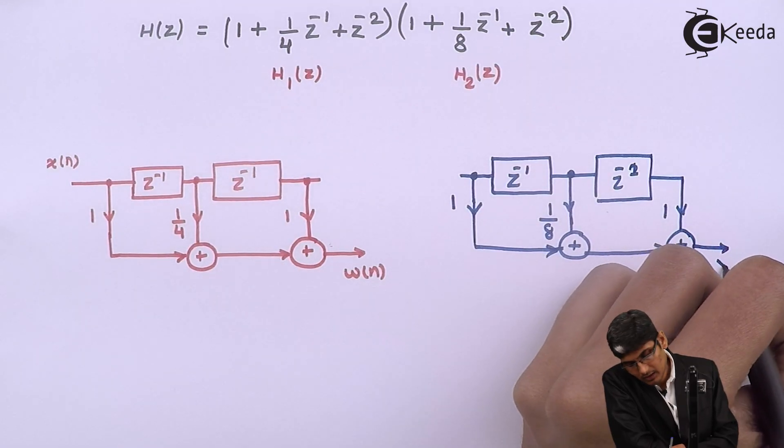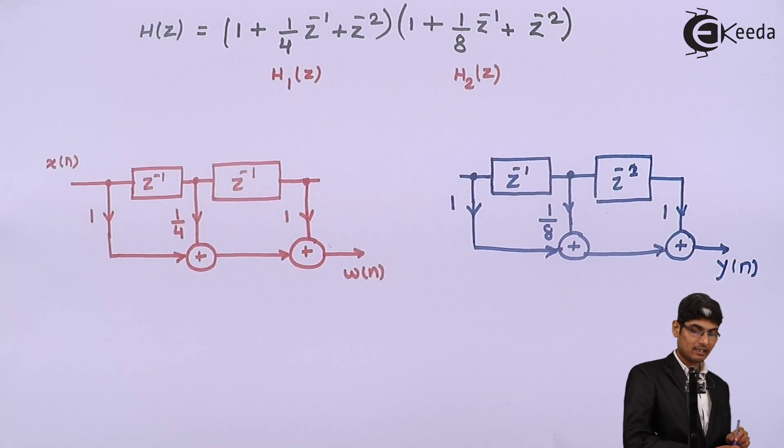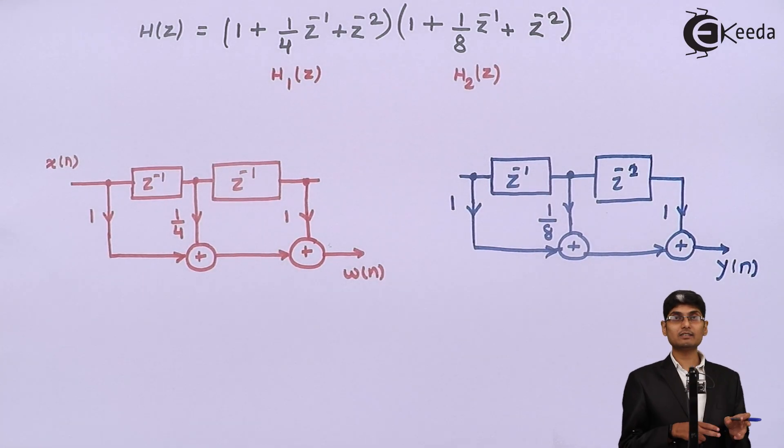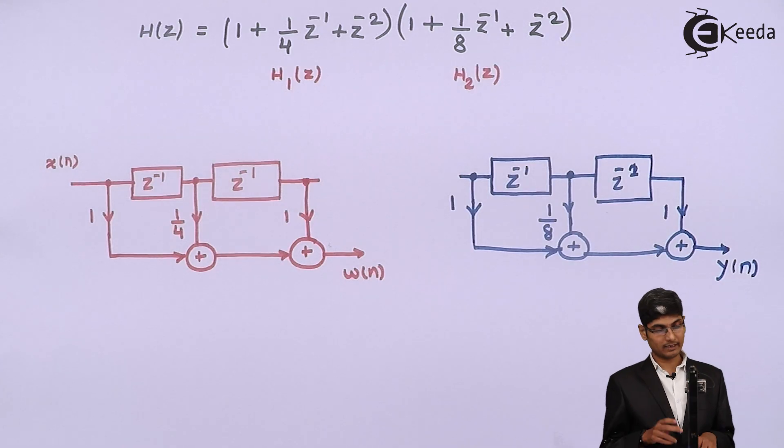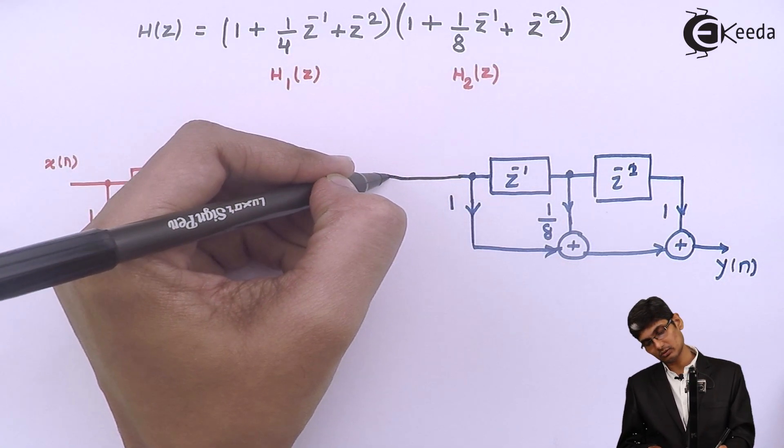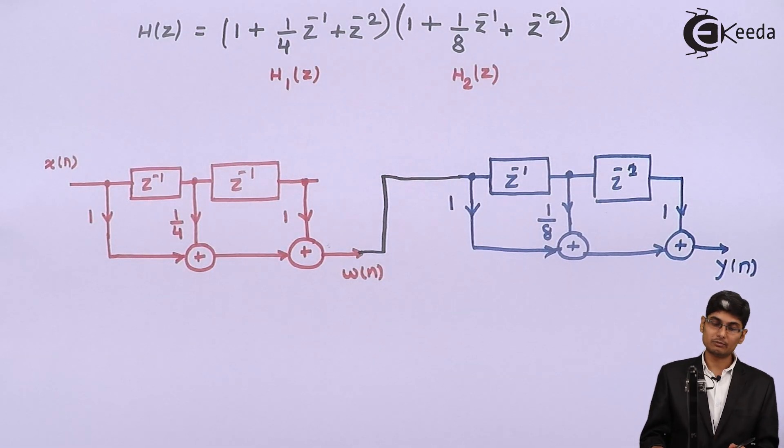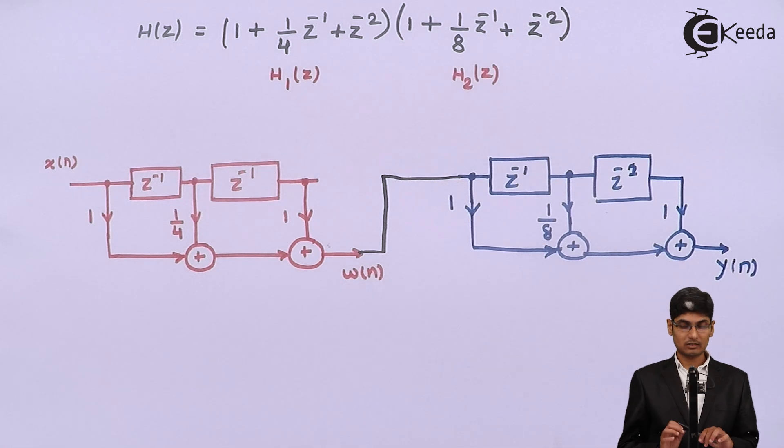This will be my final output Y of N. Because we are doing cascade and cascade says that the output of the first system should go as an input to the second system. So the final stage of this structure is to just connect these two structures, and that is my final cascade structure of the given problem. Thank you.